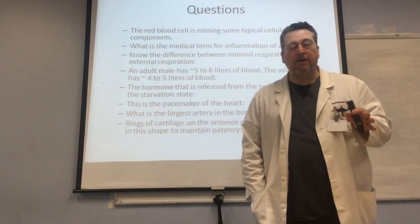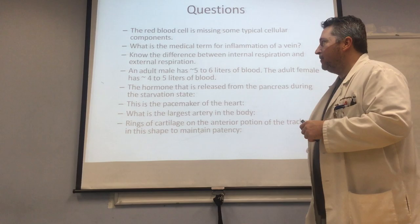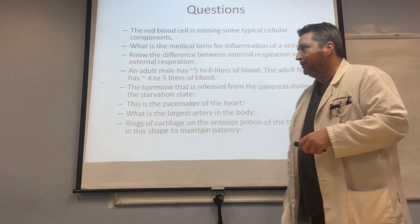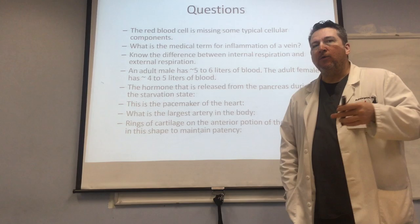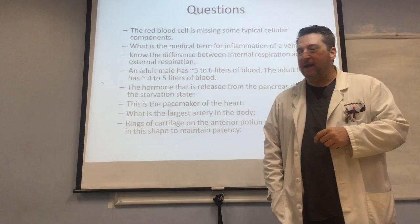An adult male has about five to six liters of blood, whereas a female adult has about four to five liters of blood, so on average we have about five liters of blood. Remember, if you lose three of those liters without replacement, there's no coming back. The hormone that is released from the pancreas during the starvation state — this is something that is going to help raise blood sugar again, and is one of the two main hormones coming from the pancreas.